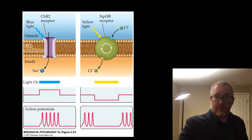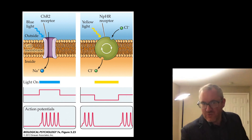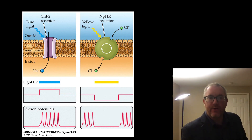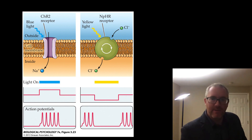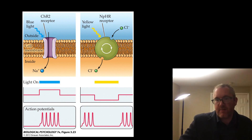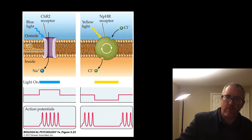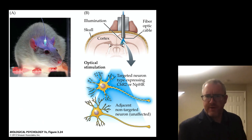Here is an illustration showing channelrhodopsin (CHR2) being activated by blue light, allowing sodium ions to flow into the cell and leading to a burst of action potentials and depolarization. By contrast, halorhodopsin — which is actually a pump rather than an ion channel, which is why it is depicted differently — would be activated by yellow or green light, leading to an influx of negatively charged chloride ions into the cell, producing hyperpolarization or suppression of neural activity.